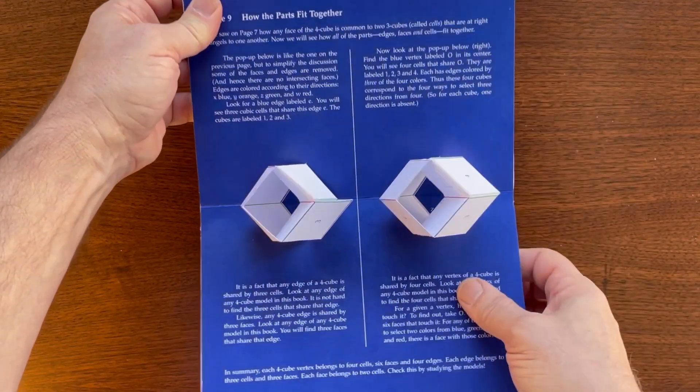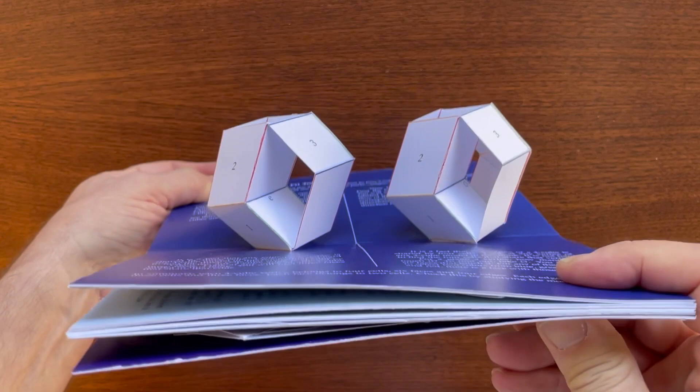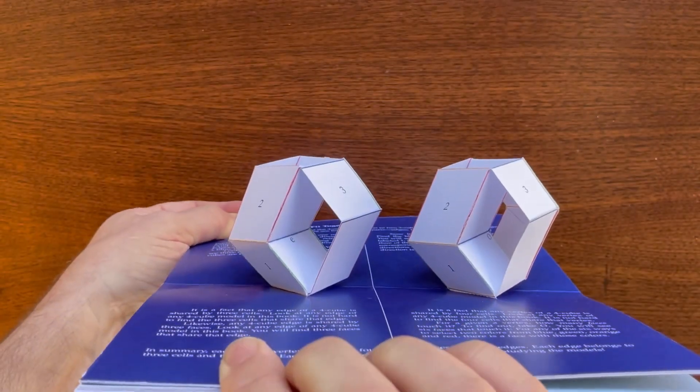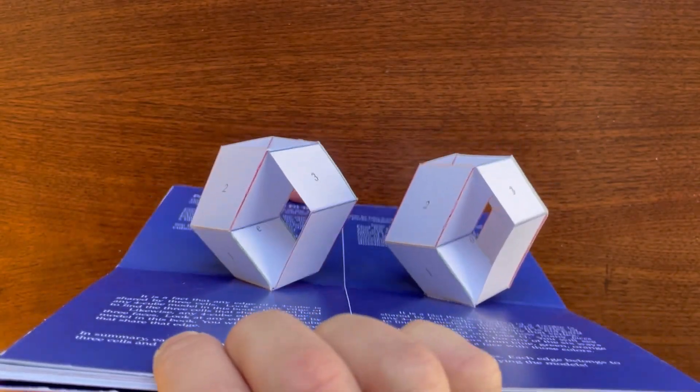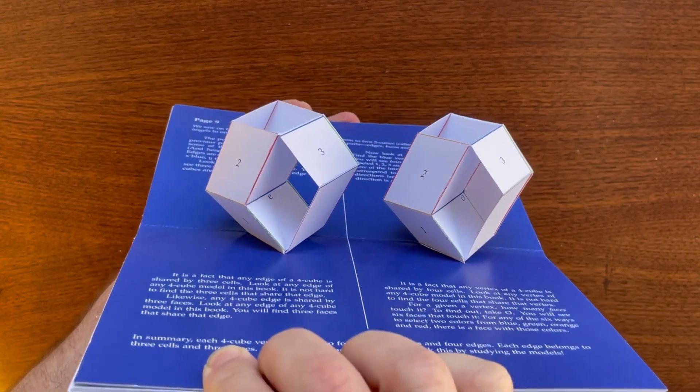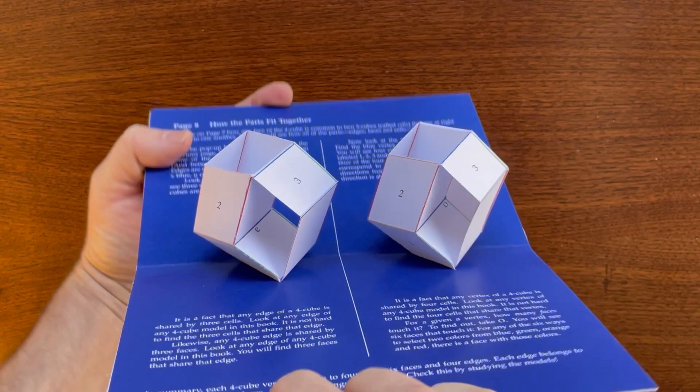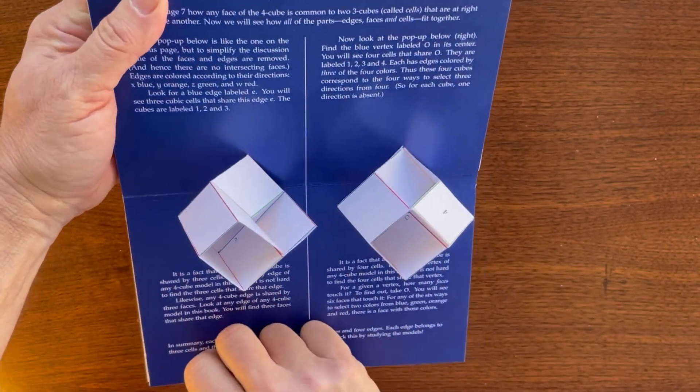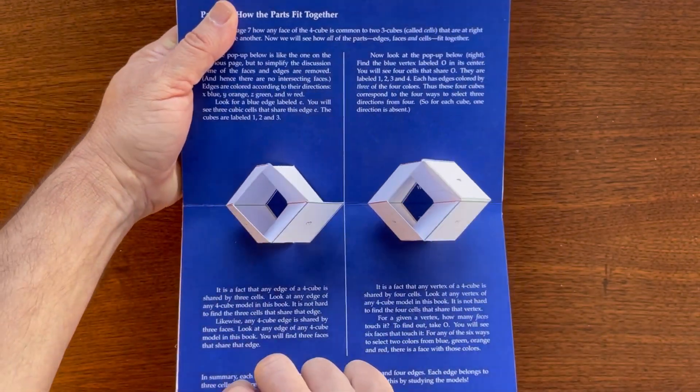This page describes how the cubic cells of the tesseract fit together. On the left, you see three cubes that share an edge. On the right, four cubes that share a vertex.